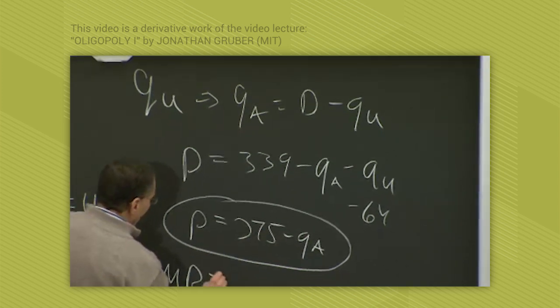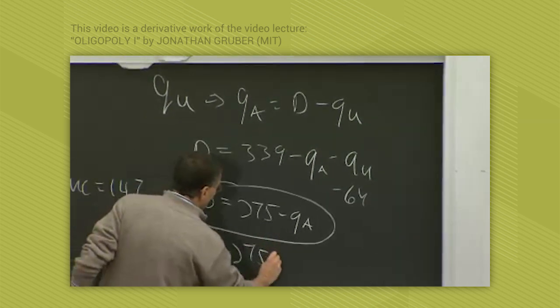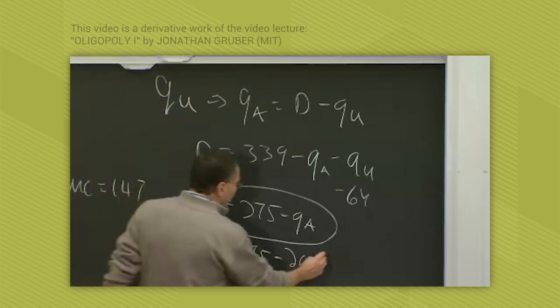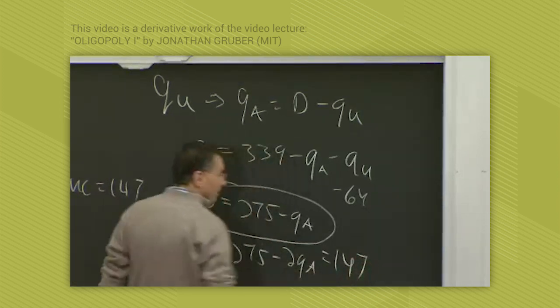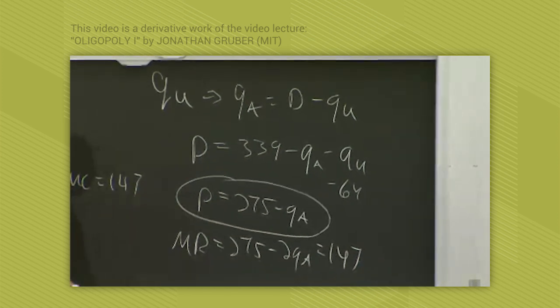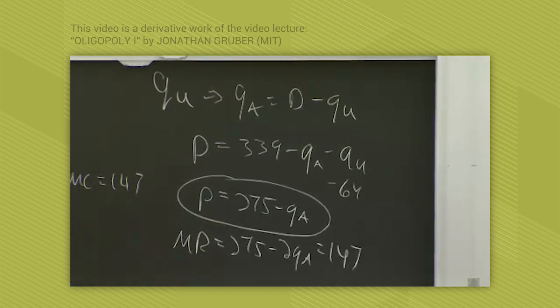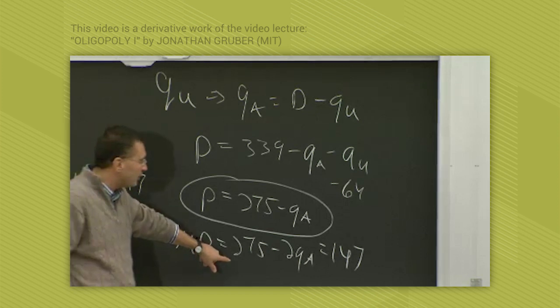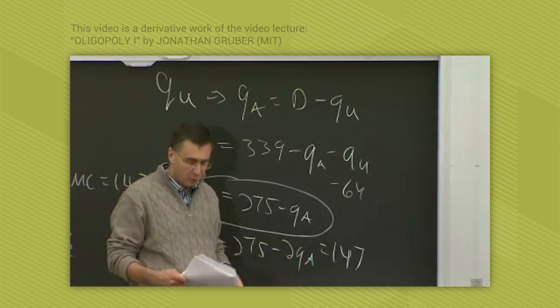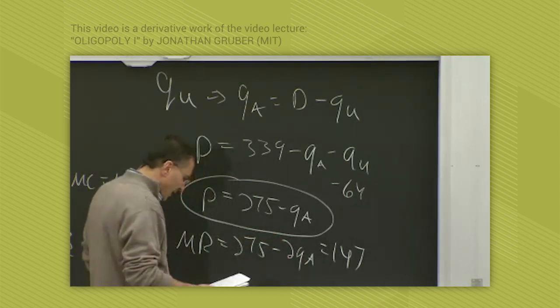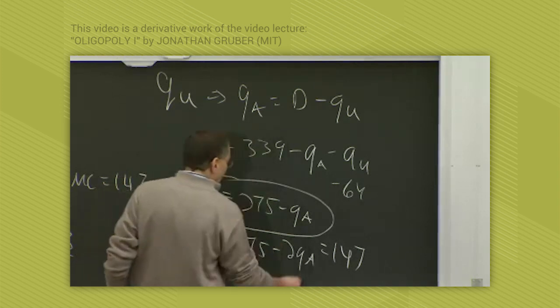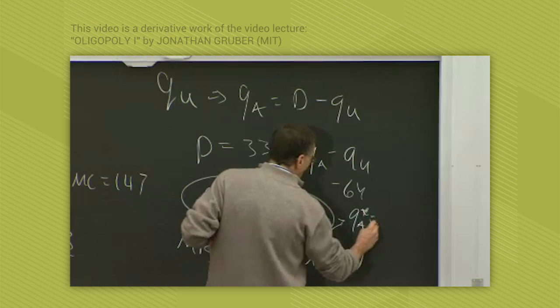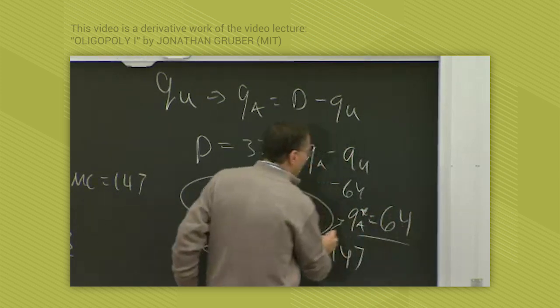My marginal cost is the same, which is 147. So now this is my new optimization equation, instead of 339 minus 2Q equals 147, it's 275 minus 2Q A equals 147.